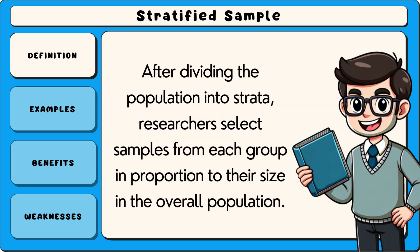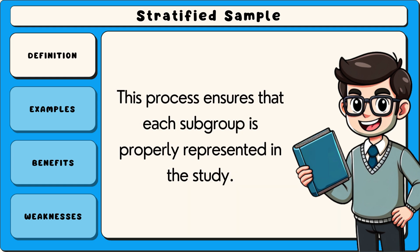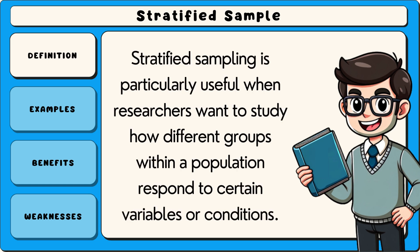After dividing the population into strata, researchers select samples from each group in proportion to their size in the overall population. This process ensures that each subgroup is properly represented in the study. Stratified sampling is particularly useful when researchers want to study how different groups within a population respond to certain variables or conditions.